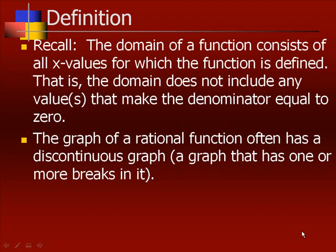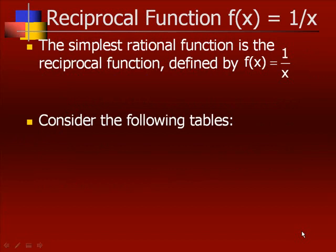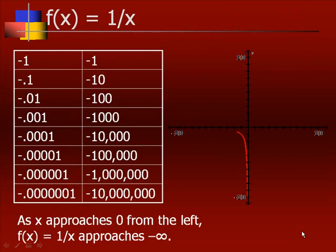We're not going to be able to draw it without picking up our pencil. Now, the reciprocal function f of x equals 1 over x is the simplest rational function. To graph this, consider the following tables.